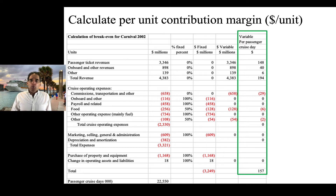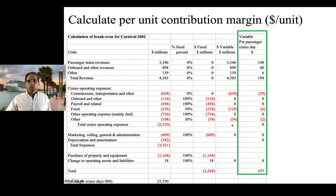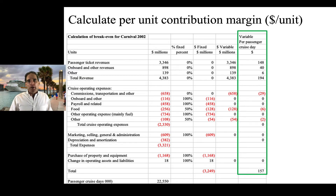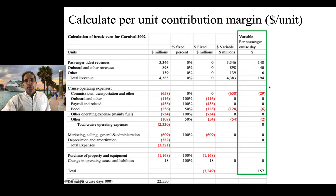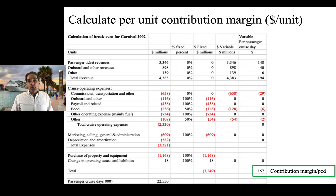Then we want to calculate contribution margin. To do that, we take the variable portion of both our revenues and costs and convert them from absolute dollars to per-unit figures. We divide the absolute dollars by the passenger cruise days to come up with a variable contribution margin per passenger cruise day. For instance, we have $194 worth of revenue per passenger cruise day. We then deduct the variable portion of our costs — the costs we incur per passenger cruise day — and we net out at $157 per passenger cruise day as our contribution margin. That's how much cash we're generating with every incremental passenger cruise day.